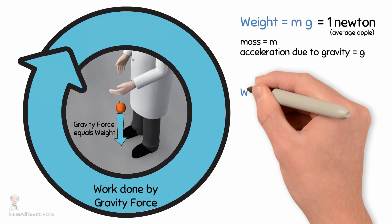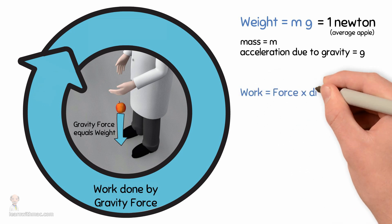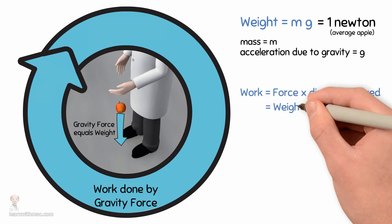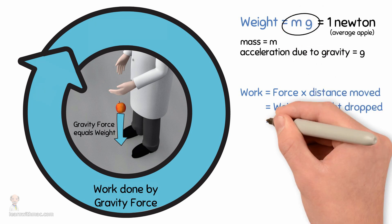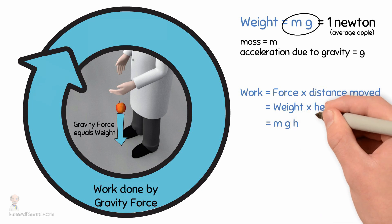The work done by the force is calculated as the force times the distance moved by the force. So in the case of the apple that is its weight times the height dropped, and this may be expressed as mg times h.